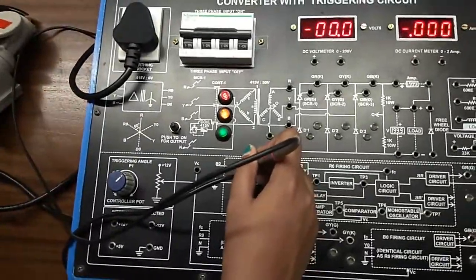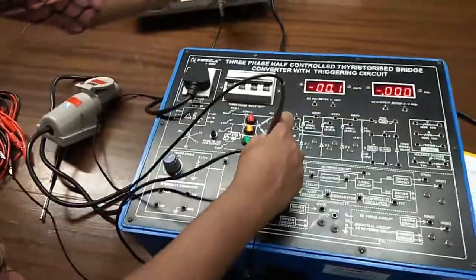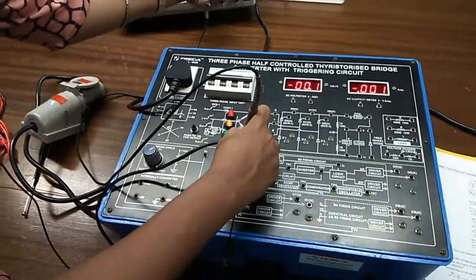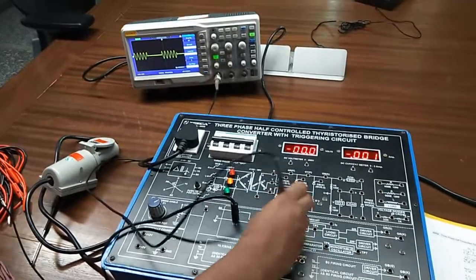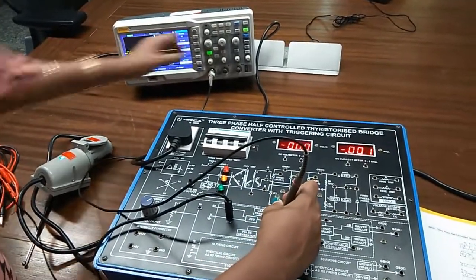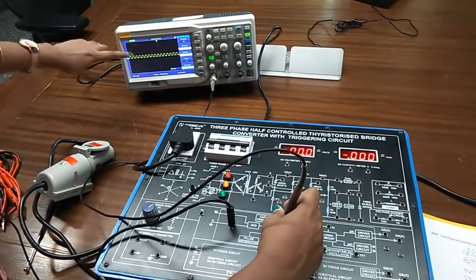And you can see the waveform in the CRO. Now, we will check TP1. This is the TP1.